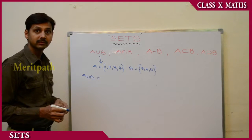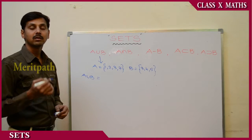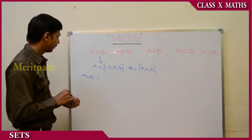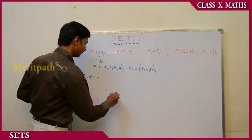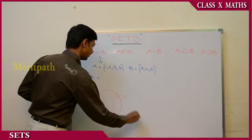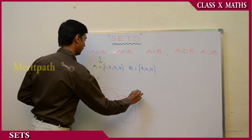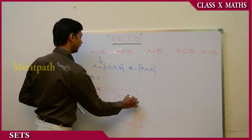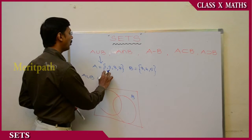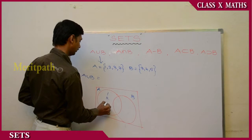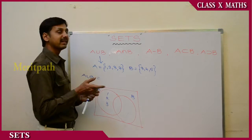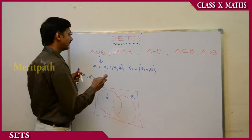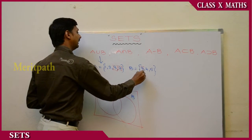Using the Venn diagram for set A = {1, 2, 3, 4} and set B = {3, 4, 5}: the common elements in both set A and set B are 3 and 4. So 3 and 4 are placed in the intersection region of the two circles in the Venn diagram.